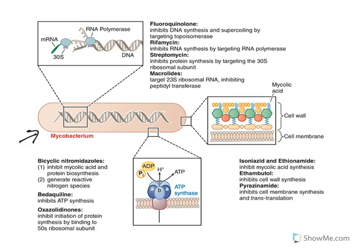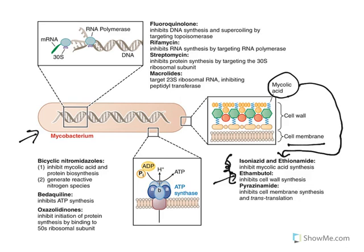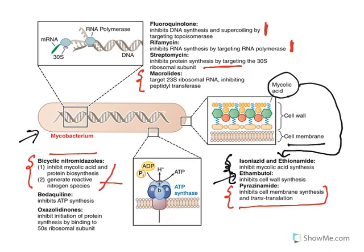The mycobacterium has a cell wall made of mycolic acid and a cell membrane. Isoniazid and ethionamide inhibit mycolic acid; ethambutol inhibits another cell wall component; pyrazinamide inhibits cell membrane synthesis. Fluoroquinolones inhibit DNA supercoiling; rifampicins inhibit RNA polymerase; streptomycin and macrolides are protein synthesis inhibitors. Delamanid and pretomanid are bicyclic nitroimidazoles that inhibit mycolic acid and protein synthesis and generate reactive nitrogen species — used to treat MDR-TB.